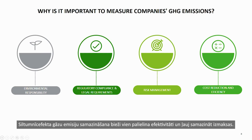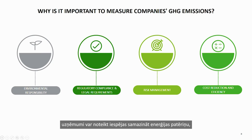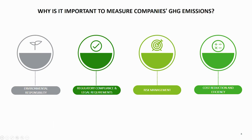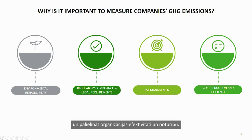Cost reduction and efficiency: reducing greenhouse gas emissions often leads to increased efficiency and cost savings. By measuring emissions, companies can identify opportunities to reduce energy consumption, cut operational costs, and improve their bottom line. Similarly, it can lead to innovation in products, processes, and technologies that are more environmentally friendly and can increase an organization's efficiency and resilience.